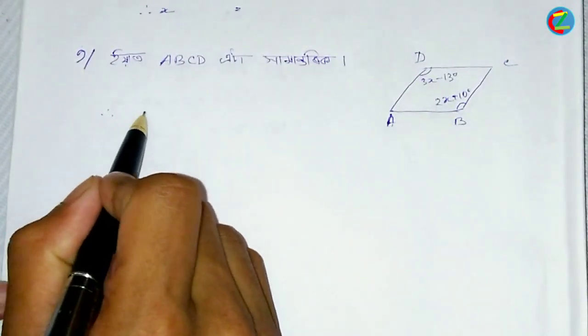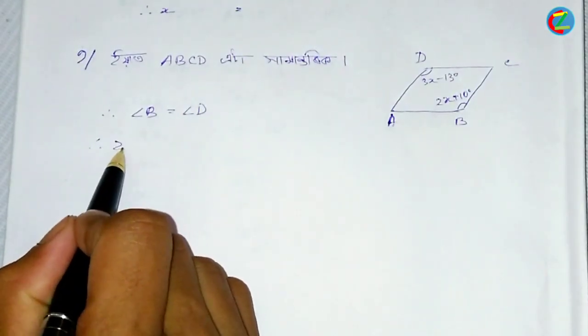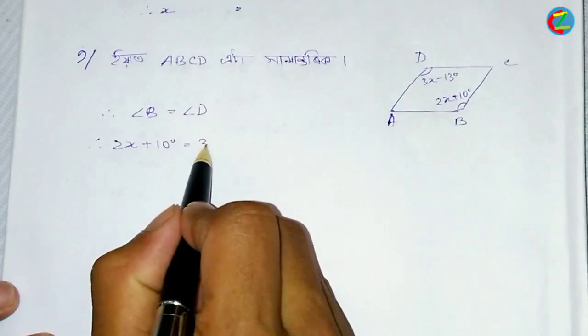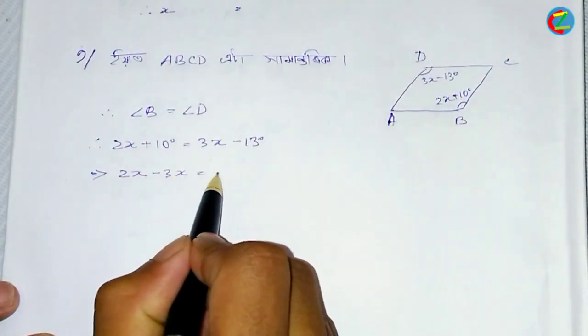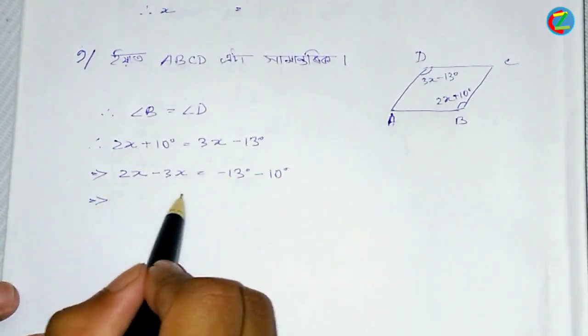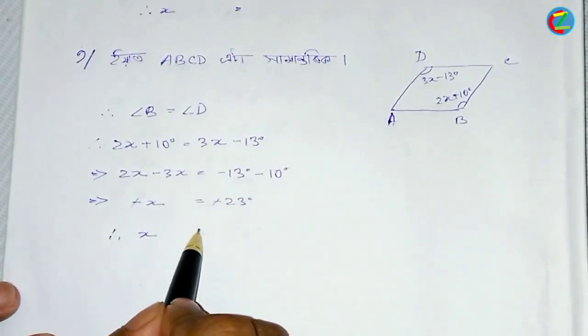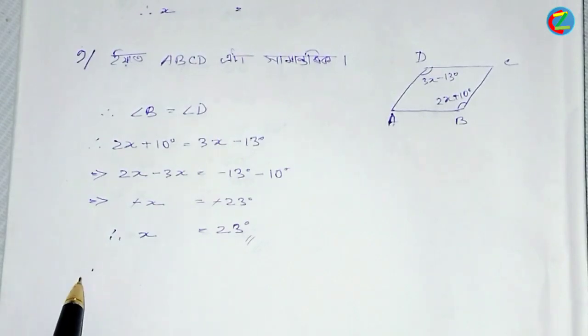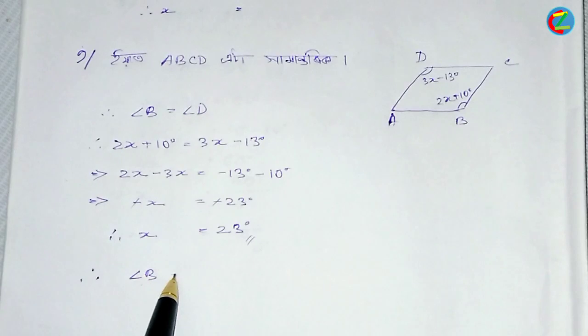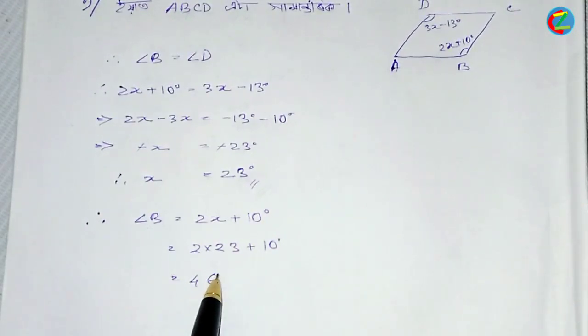B is 2x plus 3 degrees, and D is 6x minus 30 degrees. Let me solve: 2x equals minus 13, so minus x equals minus 23 degrees. That means x equals 23 degrees. B is equal to 2 times 23 plus 10.